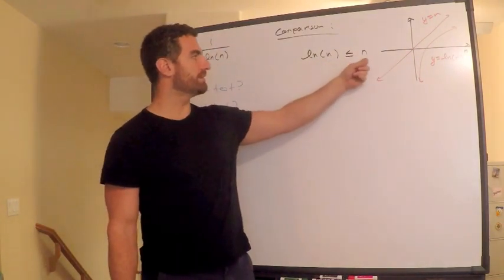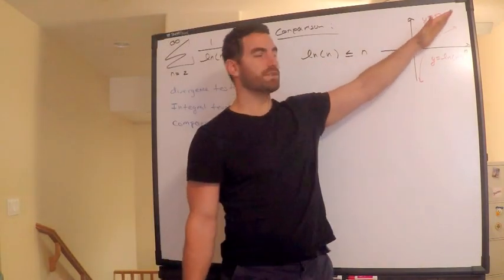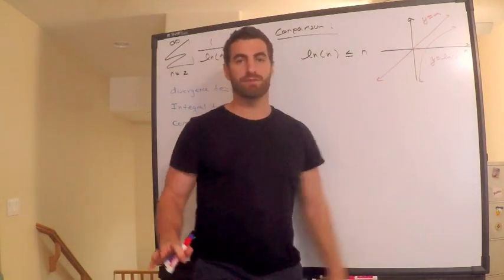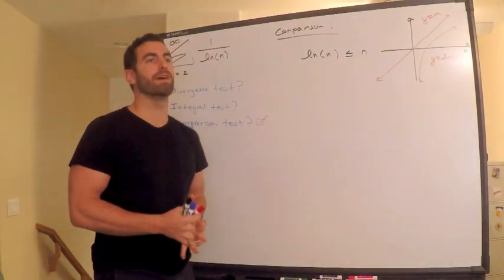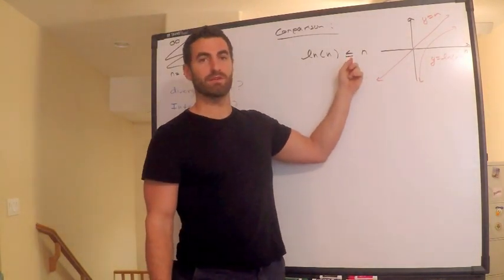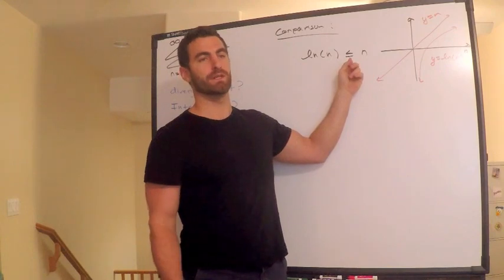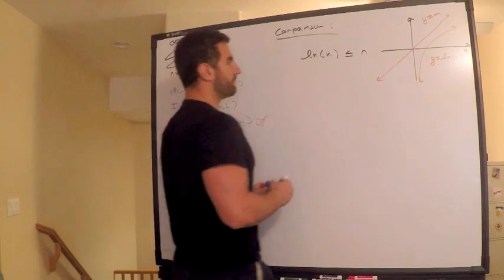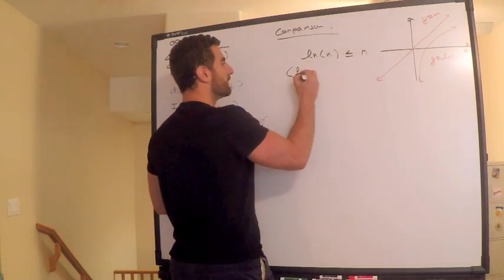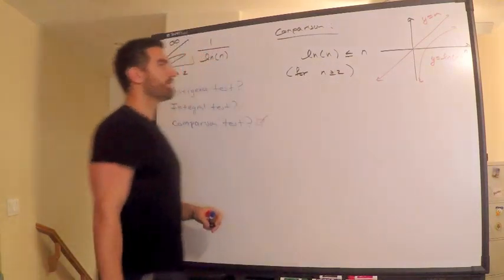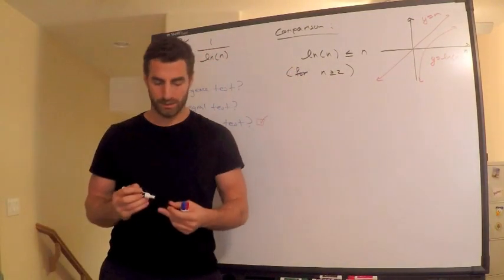This thing is decreasing. This basically has a slope which is constant. So no matter what, actually eventually, it doesn't even matter. Remember, for a finite number of terms, finite number of values of n, this may not be true. But as long as an infinite number of values of n this is true for, we are good to go. So this is definitely true. And it is actually true for n greater than or equal to 2. So this is my first inequality.